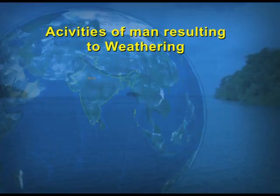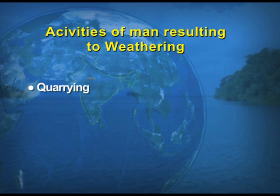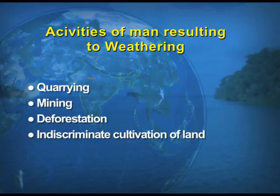Lastly, we take up the activities of man which result in weathering. Activities like quarrying — which is the mining of minerals — and mining itself contribute to weathering. Also, deforestation, because man is responsible for changing the environment as he is involved in deforestation for various reasons. Then there is indiscriminate cultivation of land — because in proportion to the population, land is not sufficient, so repeated cultivation on the same piece of land is known as indiscriminate cultivation, which results in the disintegration of rocks.